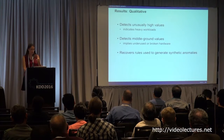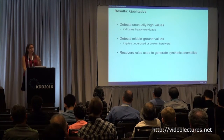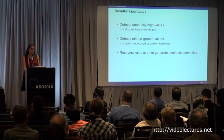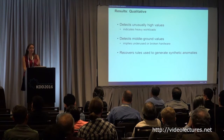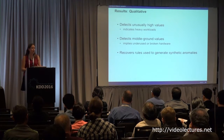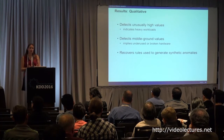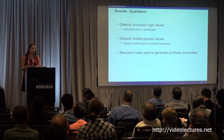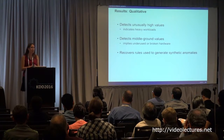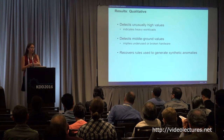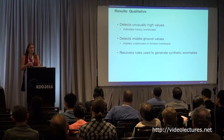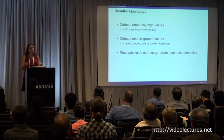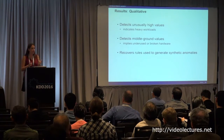For the qualitative results, we are able to detect unusually high values, which can indicate unusually heavy workloads on CPUs. We can also detect middle-ground values, which can imply underused or even broken hardware. Interestingly, this method is able to recover the rules we used to generate the synthetic anomalies — correctly identifying how each anomaly was being generated. Regarding the rules output, you might think we'd get too many rules from 200 trees, but we aggregate them. If the rule is something like 'voltage less than 1.5', and we find trees with thresholds of less than 1.5, 1.1, or 1.2, we aggregate and output a single rule per feature singled out as important.